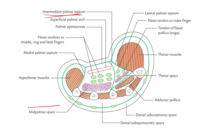The mid palmar space is related anteriorly, posteriorly, medially, and laterally. Proximally, the space is in communication with the forearm space of Parona. Distally, the space is seen communicating with the digital fascial sheath of the second and the third digit.